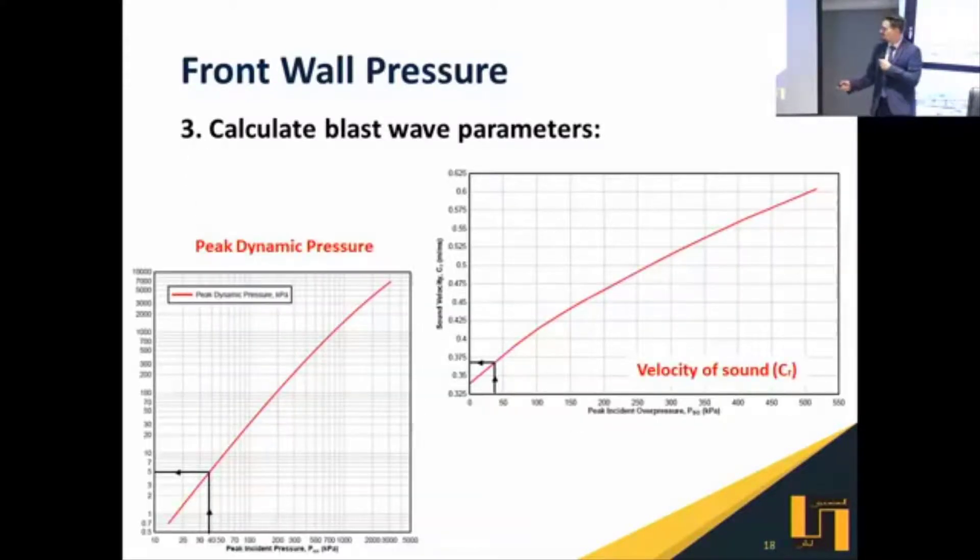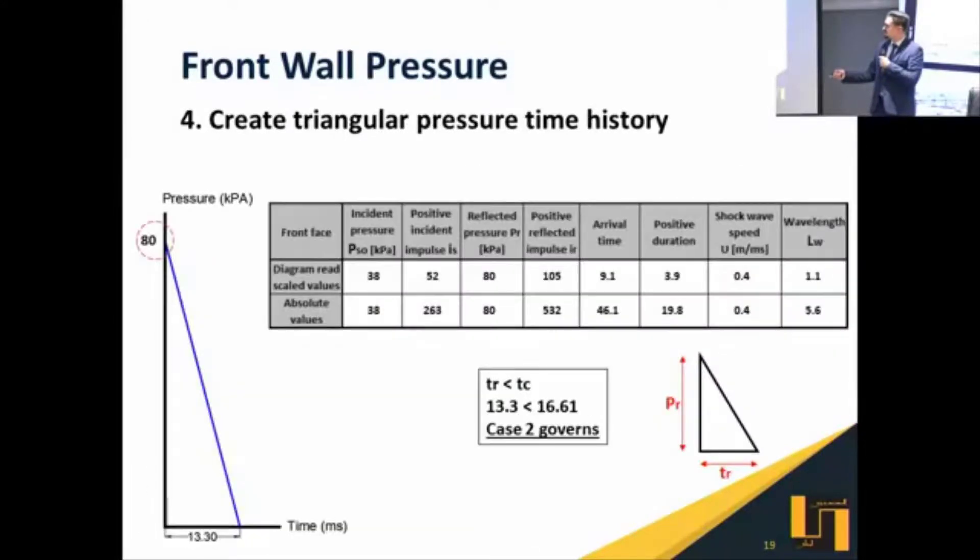Also, we have other curves. Using the same manner, we can determine the peak dynamic pressure and the velocity of sound, which help us in some of the calculations. This is a summary for our problem: these are the parameters, and this is the idealized blast pressure on the front surface. We have the peak value which is 80 kilopascals.